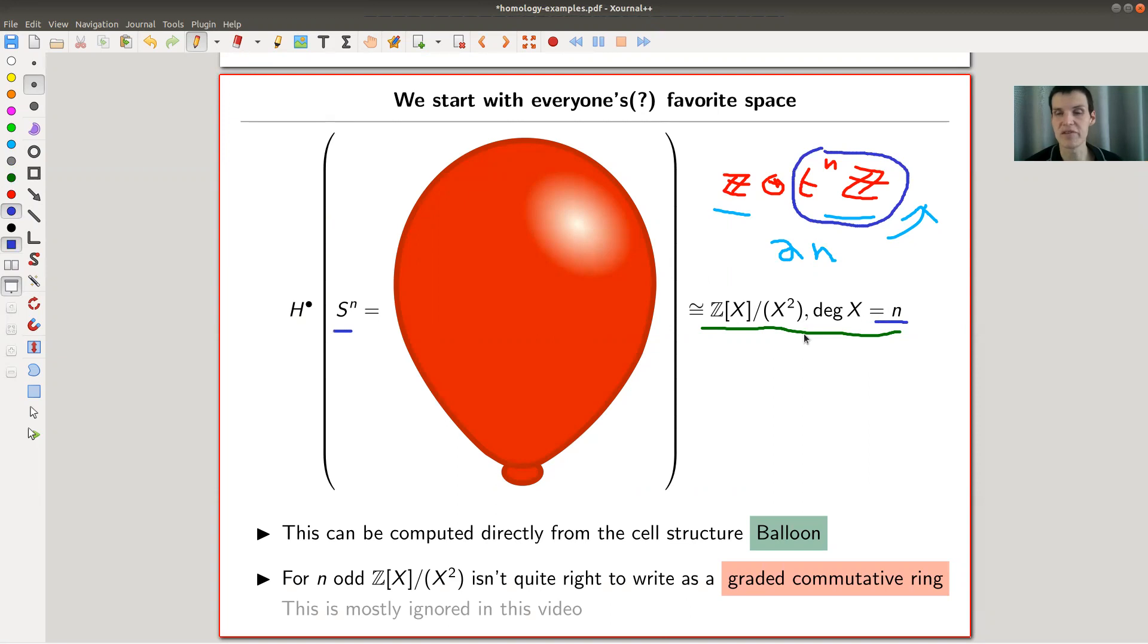And this is really, really easy to compute just from the cellular cohomology from this balloon picture where you have one zero cell and a huge n cell that you just glue to it. And the whole complex is basically zero, and that's how you can actually prove this.